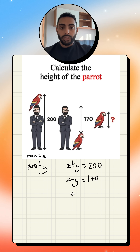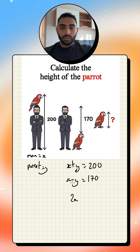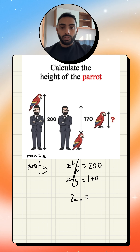X plus X will give me 2X. And if you add these together, Y plus negative Y is going to cancel that out — it's going to disappear, which is useful. So 2X is equal to 370.